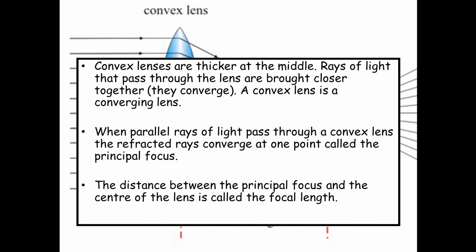When parallel rays of light pass through a convex lens the refracted rays converge at one point and this is called the principal focus or the focal point. The distance between the principal focus and the centre of the lens is called the focal length.